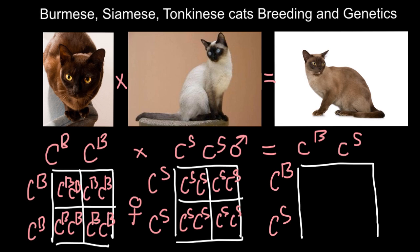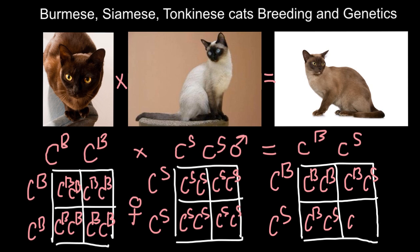...we can see all the possible genotypes in the following generation. Here we would have C^B and C^B. In the next cell, we would have C^B from one parent and C^S from the other parent, and C^S and C^S here. According to our Punnett square...